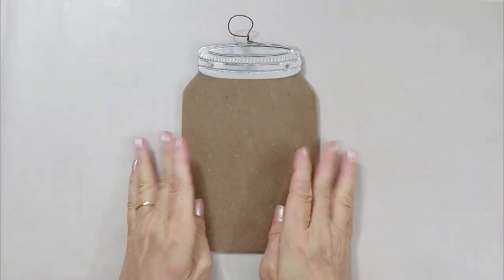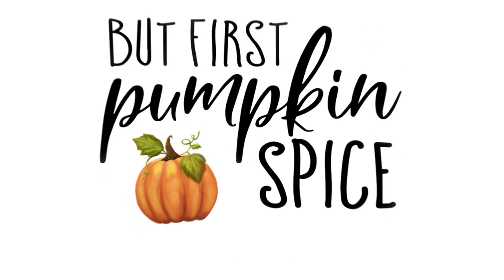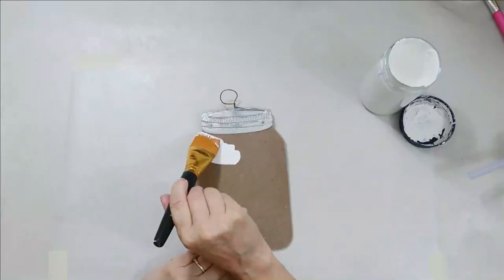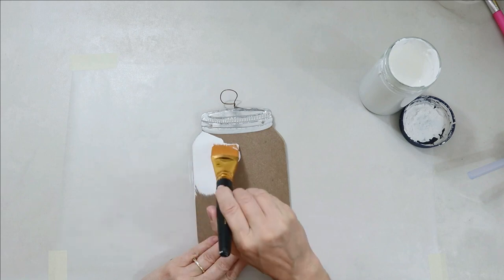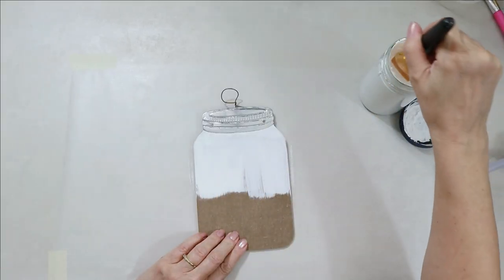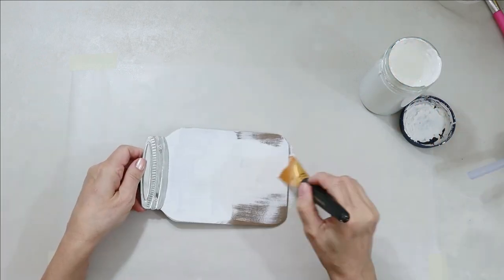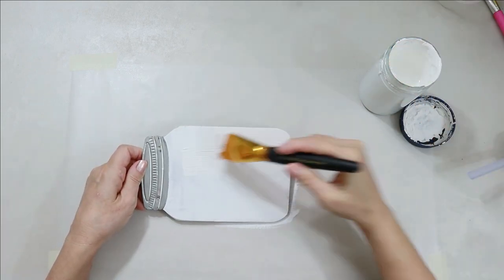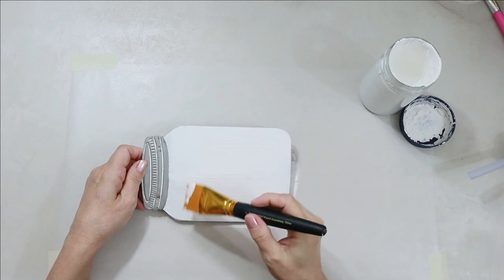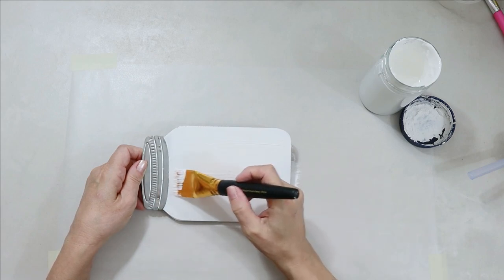For this craft, you're going to need a small pre-made mason jar and this free printable here that I designed will be available for you down in the description box. And we're just going to paint this little mason jar white. And I'm painting with my DIY chalk paint.